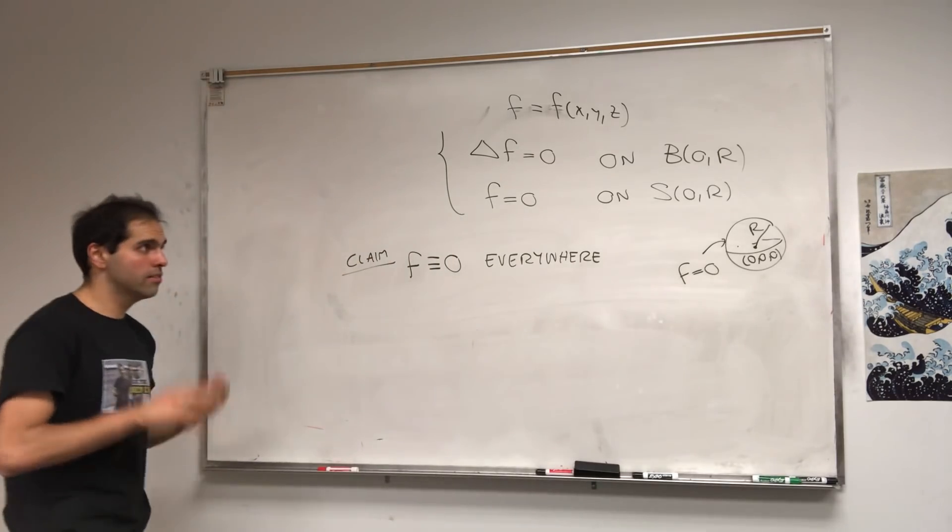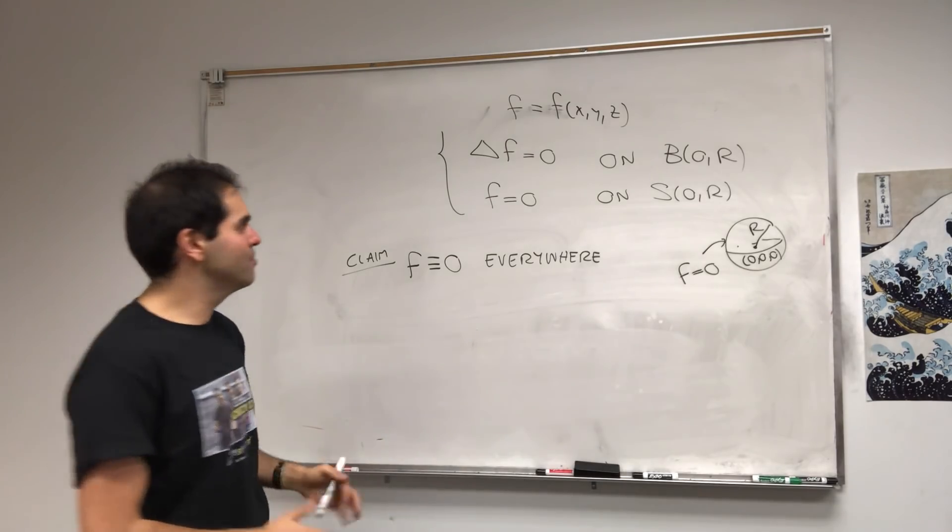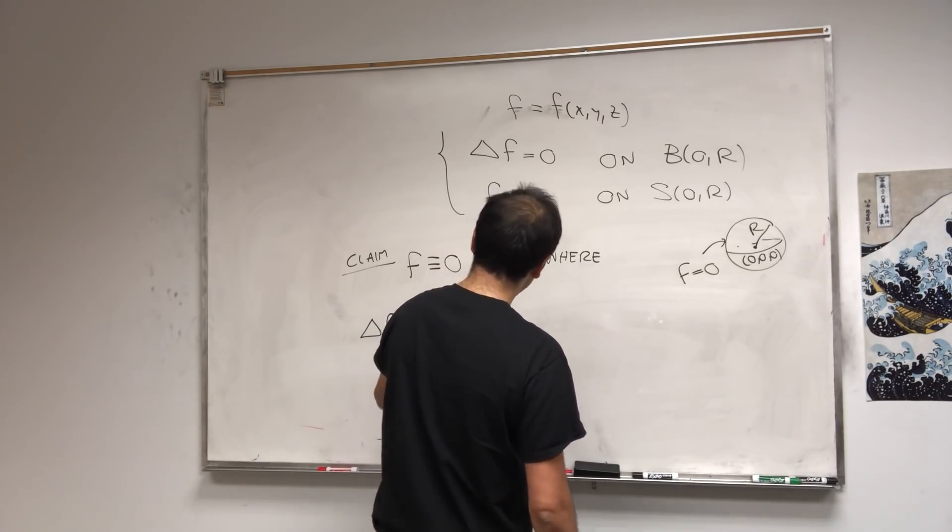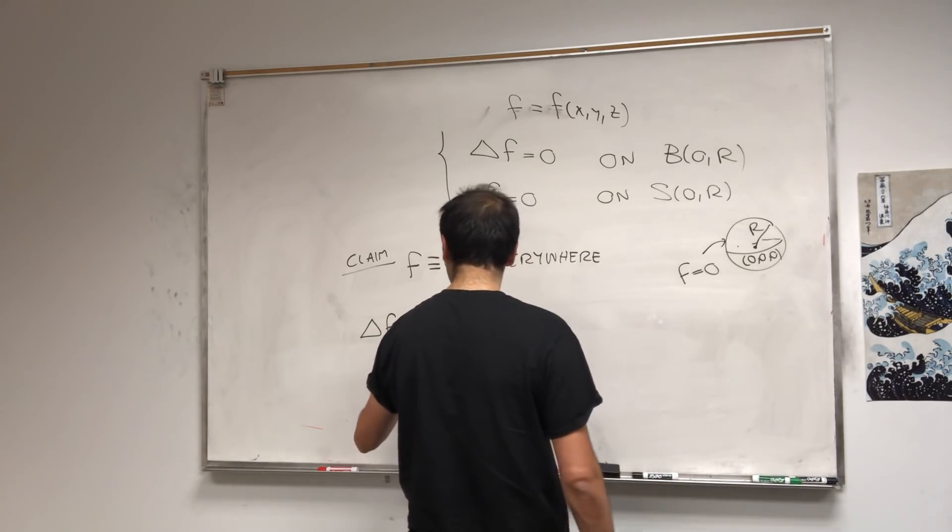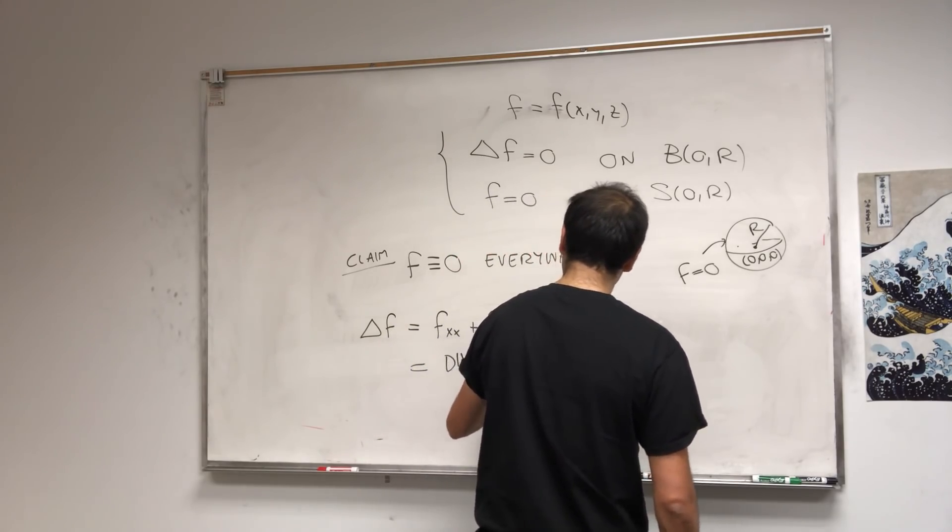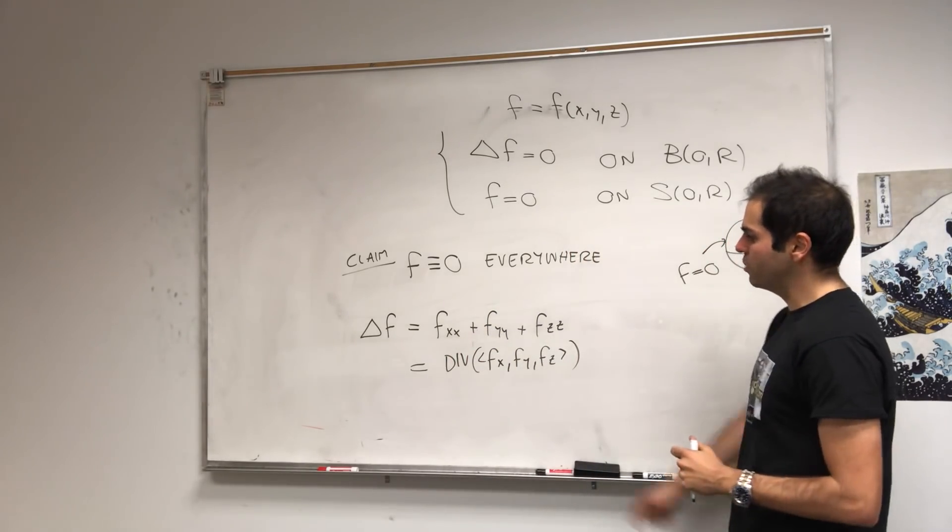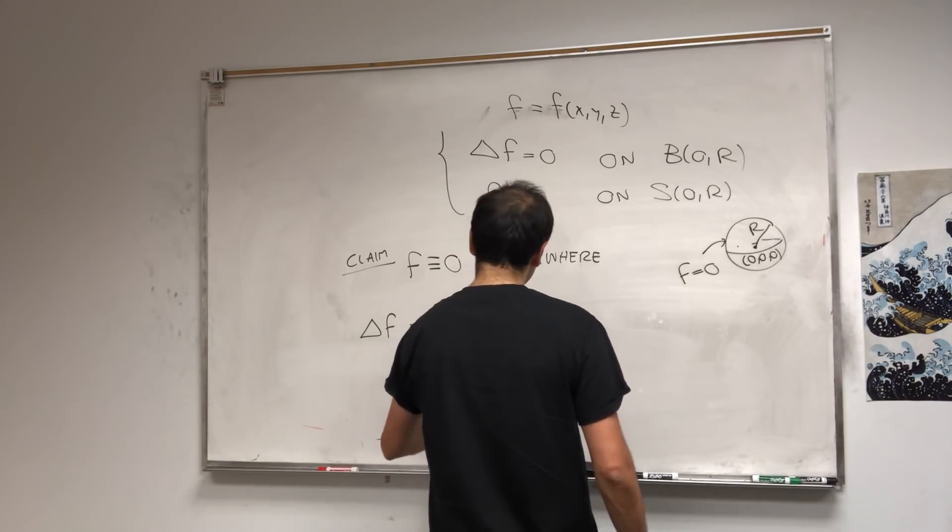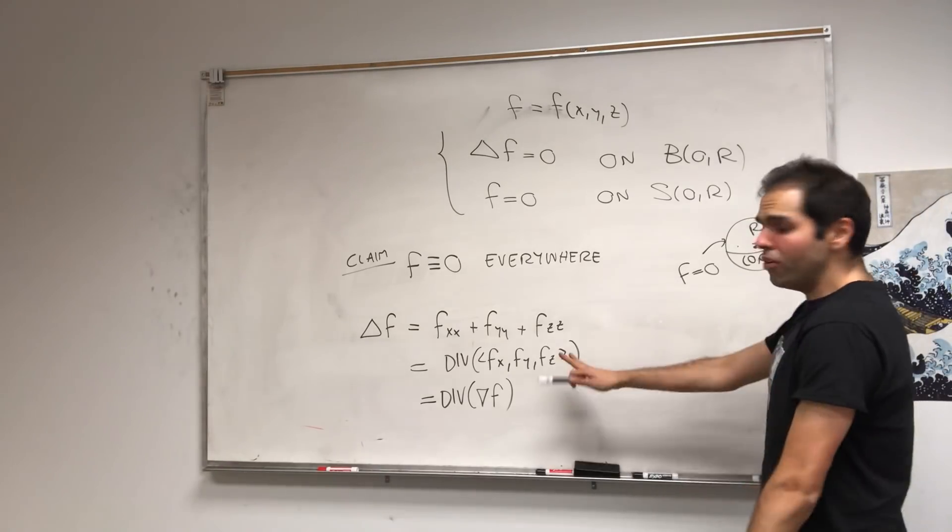This is the question no one got. It's slightly tricky, but let me tell you that it is possible to do it. So Laplacian of f, but this is just f_xx plus f_yy plus f_zz. And notice what it is, it's really the divergence of f_x, f_y, f_z, because you take the first component differentiated with respect to x, the second one with y, the third one with z. So this is really the divergence of the gradient of f. And we know this is zero.